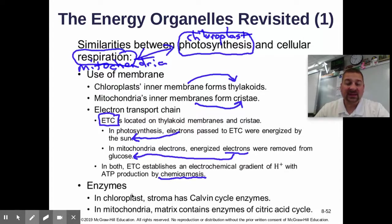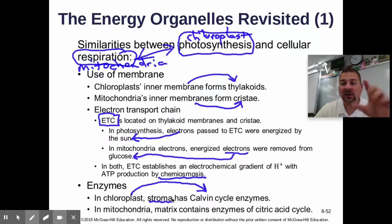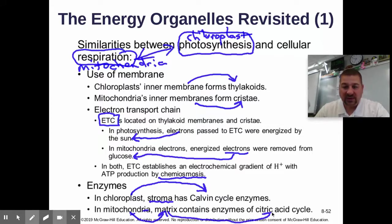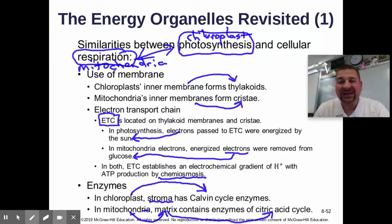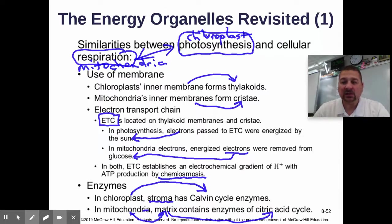Both organelles also have enzyme cycles. In photosynthesis, that's the Calvin cycle, happening in the liquid stroma of the chloroplast. In mitochondria, you have the matrix, where the citric acid or Krebs cycle occurs. There are a lot of similarities, and we can revisit the endosymbiotic theory — how these organelles may once have been their own prokaryotes, engulfed by a larger prokaryote or early eukaryote, and kept alive as organelles that developed these specific functions in eukaryotic cells.